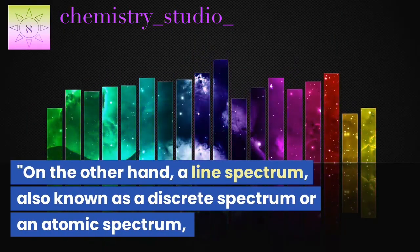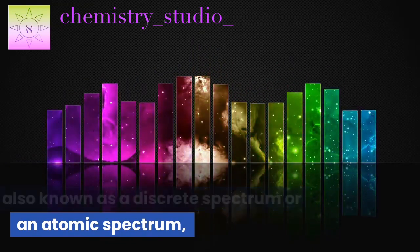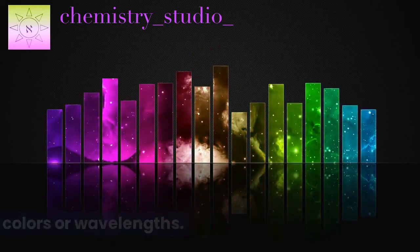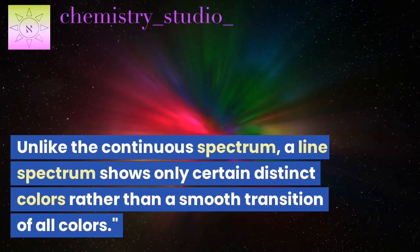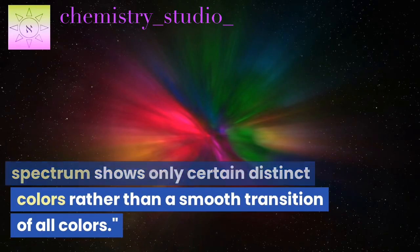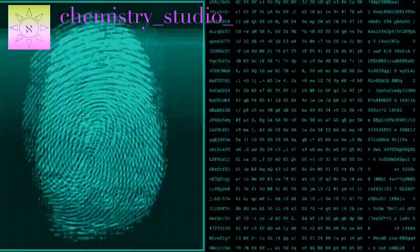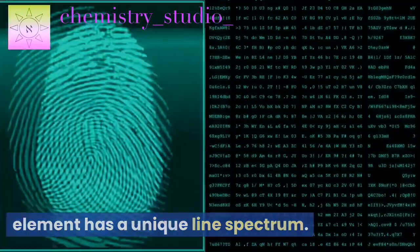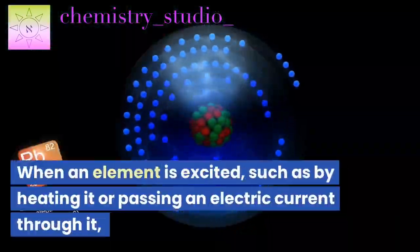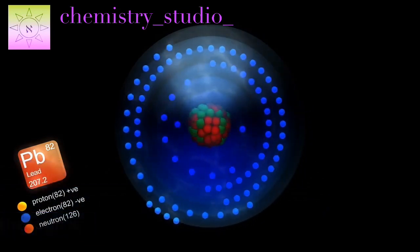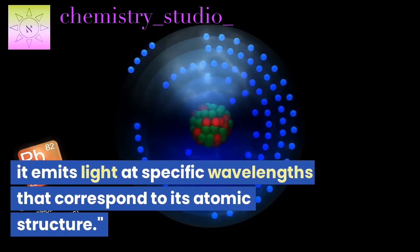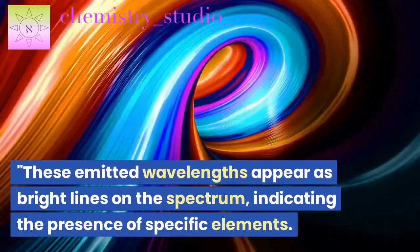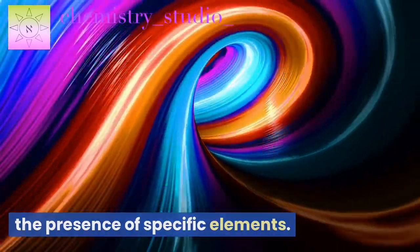On the other hand, a line spectrum, also known as a discrete spectrum or an atomic spectrum, consists of individual lines of specific colors or wavelengths. Unlike the continuous spectrum, a line spectrum shows only certain distinct colors rather than a smooth transition of all colors. Line spectra are often referred to as fingerprints of elements because each element has a unique line spectrum. When an element is excited, such as by heating it or passing an electric current through it, it emits light at specific wavelengths that correspond to its atomic structure. These emitted wavelengths appear as bright lines on the spectrum, indicating the presence of specific elements.